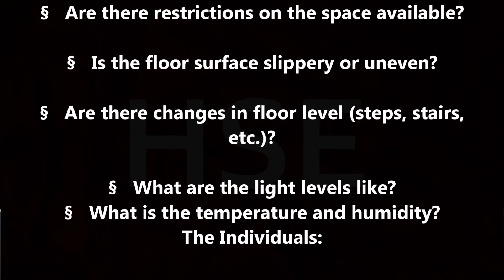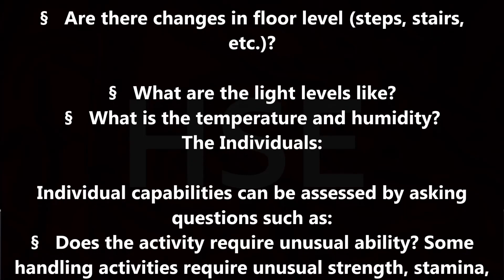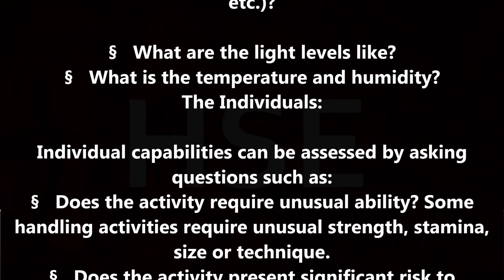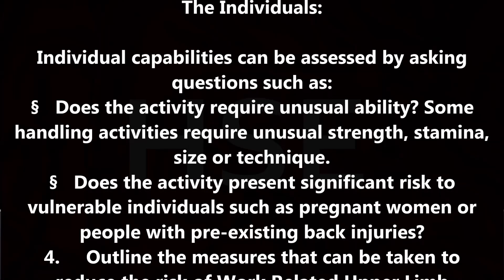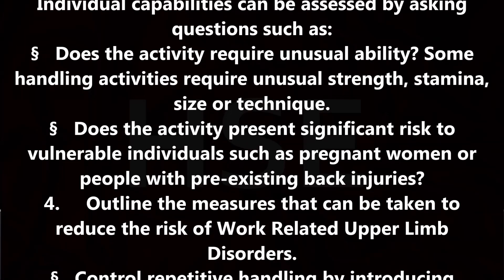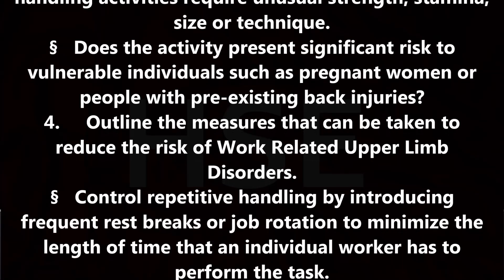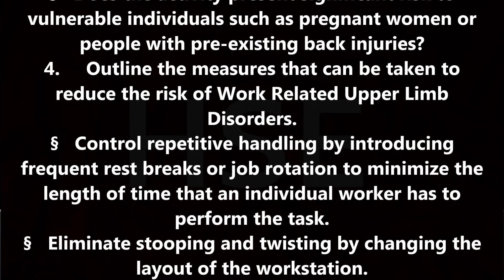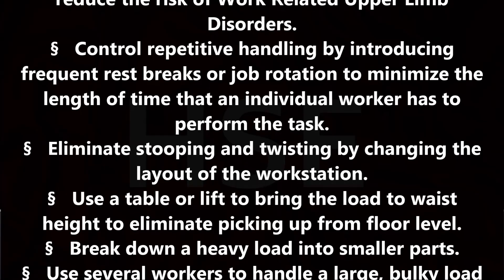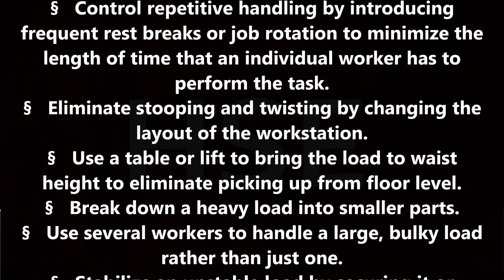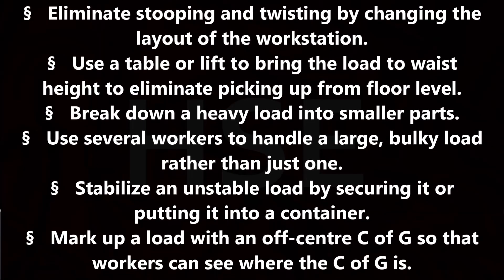Outline the measures that can be taken to reduce the risk of work-related upper limb disorders. Control repetitive handling by introducing frequent rest breaks or job rotation to minimize the length of time an individual worker has to perform the task. Eliminate stooping and twisting by changing the layout of the workstation. Use a table or lift to bring the load to waist height to eliminate picking up from floor level. Break down a heavy load into smaller parts. Use several workers to handle a large, bulky load rather than just one. Stabilize an unstable load by securing it or putting it into a container. Mark up a load with an off-center CoG so that workers can see where the CoG is. Attach handles to a load that is difficult to grasp.